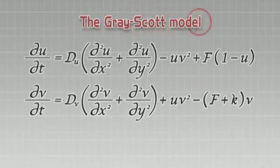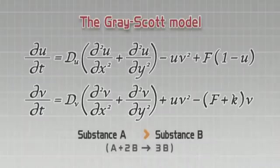This equation is known as the Gray-Scott model. It represents a chemical reaction process in which a continuously supplied substance A reacts with another substance B, transforms into substance B, and then eventually decomposes.